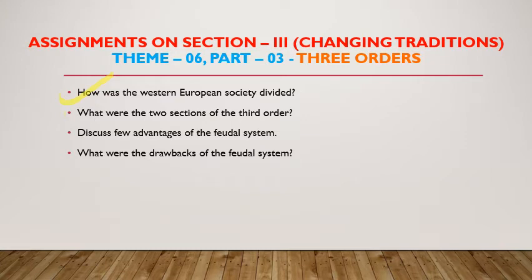The second question is: What were the two sections of the third order? The answer is the free peasants and the serfs. The third question: Discuss a few advantages of the feudal system — here you have to write about the positive side of the feudal system. The fourth question: What were the drawbacks of the feudal system? For writing these two answers, students, you need to study this part of the chapter as well as Part 4.